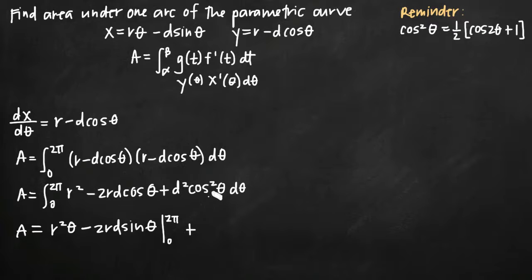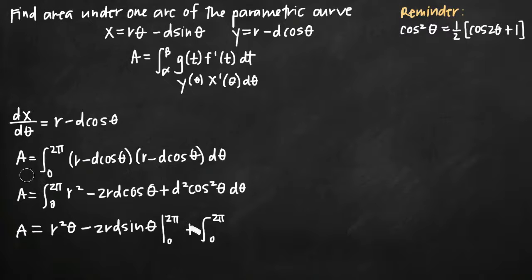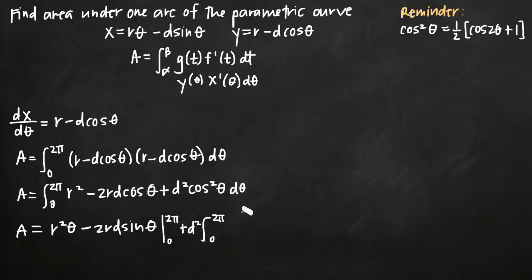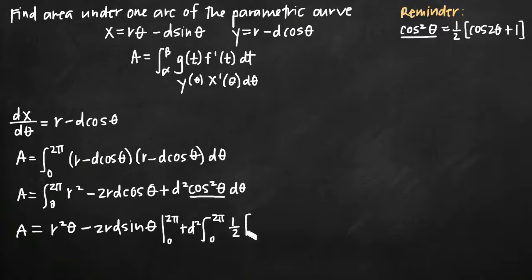Then we have plus our last term: the integral from 0 to 2 pi of d squared cosine squared theta. We can pull the d squared out in front since it's a constant, giving plus d squared. Then we just have cosine squared of theta d theta left inside the integral. We can make a substitution directly for cosine squared of theta, replacing it with one half times the quantity cosine of 2 theta plus 1, d theta.